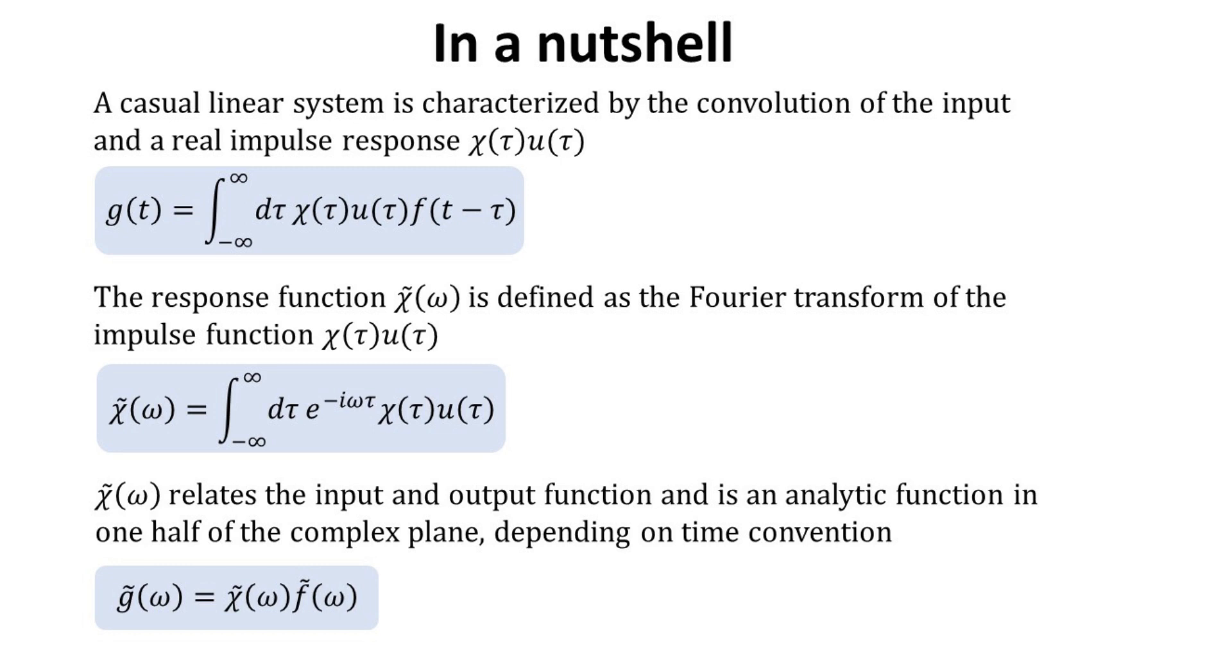To summarize, we discussed the governing equations for such a linear causal and time-invariant system, which relates the input and output functions in the time and frequency domain. We discussed the physical intuition why the time-domain output response is described by convolution of the input function and the system impulse response. We derived the elegant frequency domain response via Fourier transformation. Lastly, we proved that the generalized response function must be analytic over the upper or lower half-complex frequency plane.